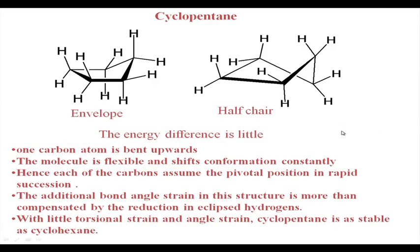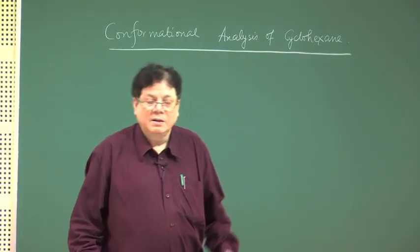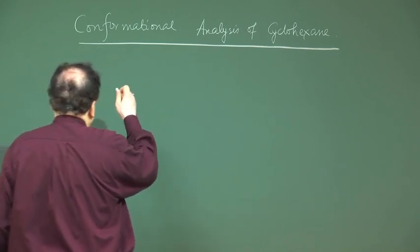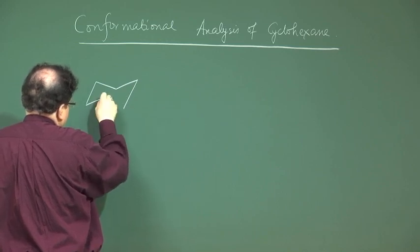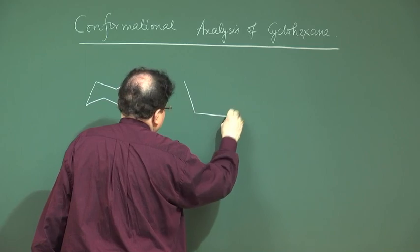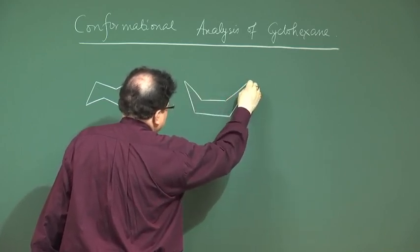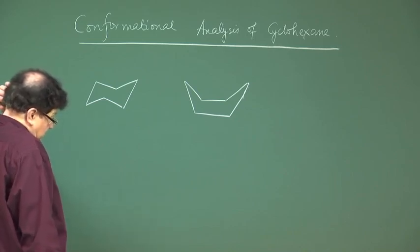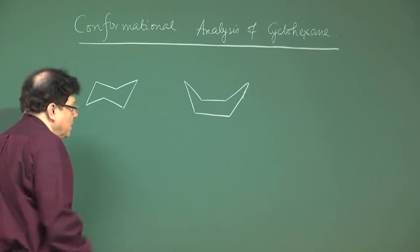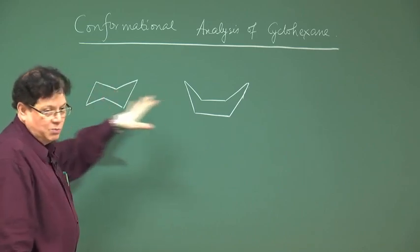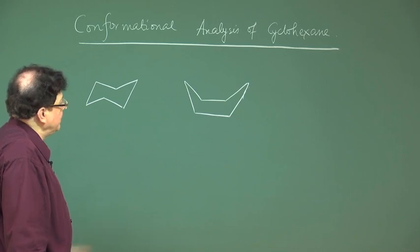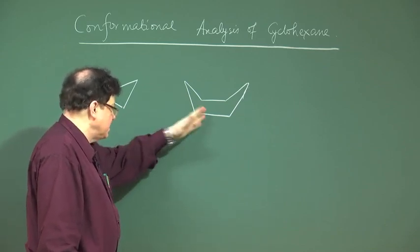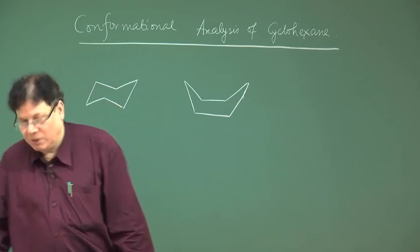Now we move to cyclohexane. It was Sachse and Mohr who first proposed that cyclohexane exists in two extreme conformations: one is called the chair conformation and the other is called the boat conformation, the names arising from their geometry. Amongst these two, the chair conformation is more stable than the boat conformation. We will first inspect the chair conformation, then move to the boat and explain why it is less stable.